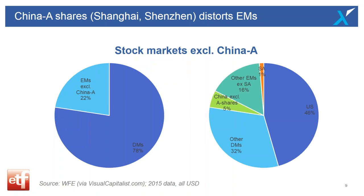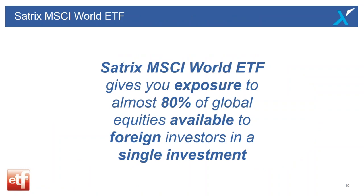Breaking it down further: the USA represents 46% — almost half of the investable opportunity set in global equities. China excluding A shares is just 5%. Other emerging markets excluding China and South Africa is 16%. South Africa is about 1.4%. The MSCI World Index, tracked by the Satrix MSCI World ETF, is the quickest and easiest way to get global exposure to the bulk of what's readily available in investment markets — and you do that in a single investment in rands on the JSE.